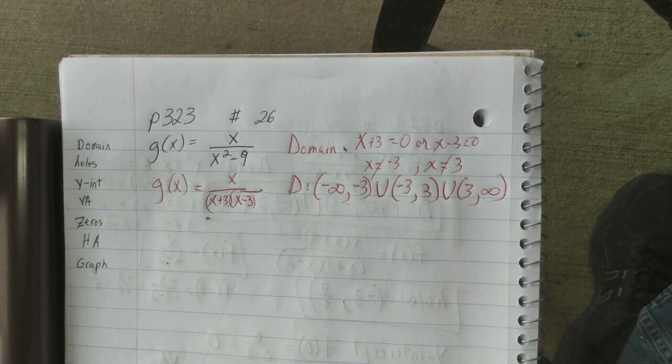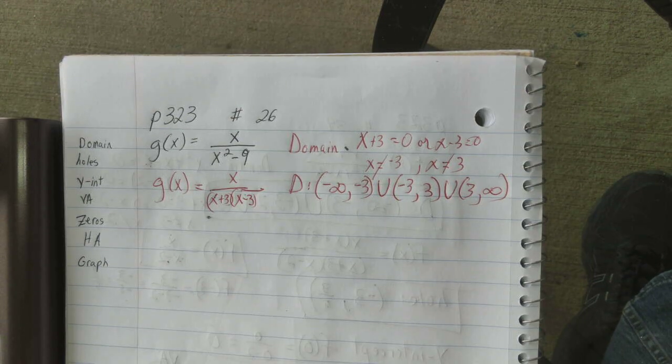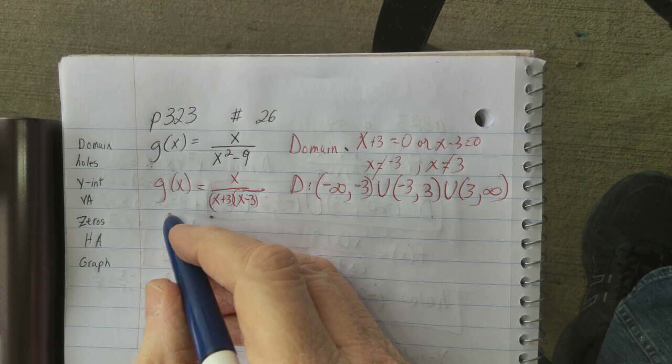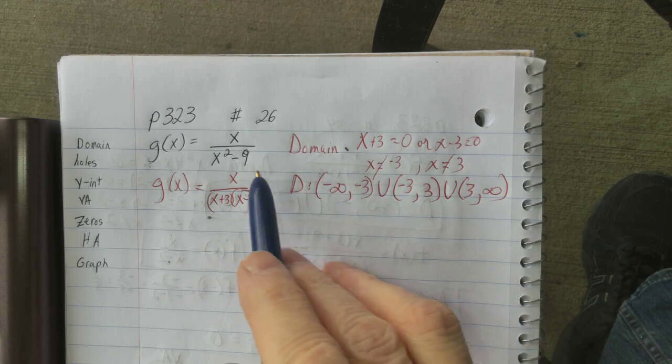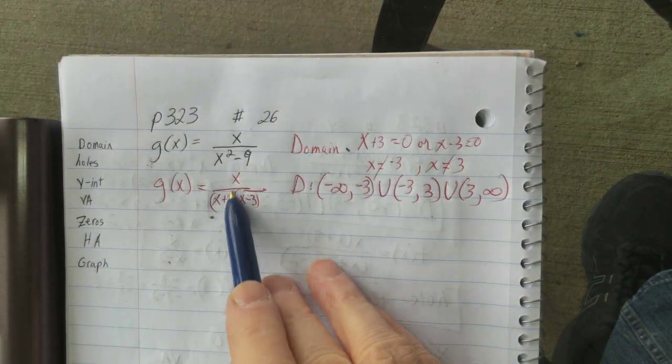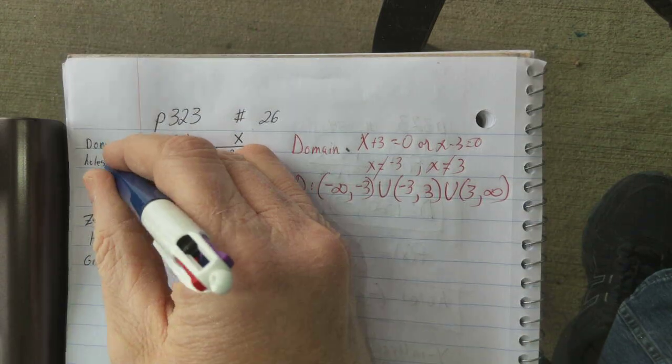That always comes in handy with the things we've got to do with this. Now, the next thing I want to do is, there are no holes in this. When you don't simplify, when you don't have anything that you can cancel out, we're not going to have any holes.